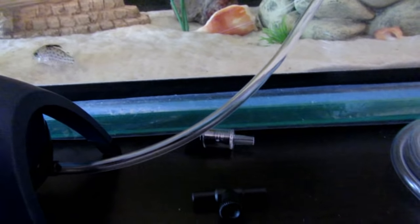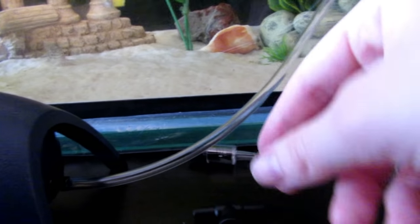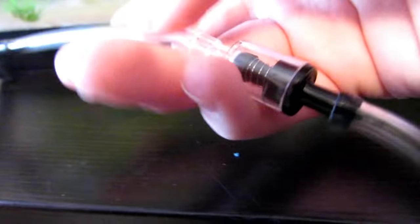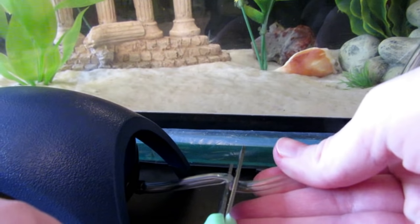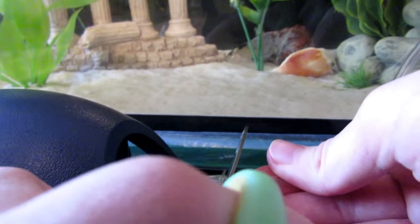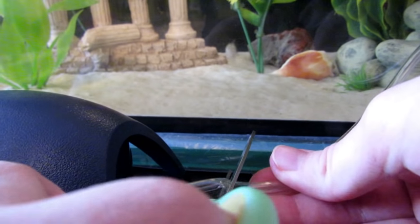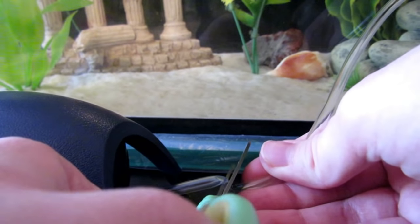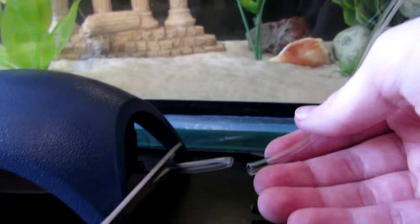After you have the tubing connected to the air pump, now we're going to take your scissors and cut the tubing so we can put in the air control thing and the check valve if you have one. It doesn't really matter where you place the air control thing, just as long as it's in front of the check valve. I decided to cut mine about this close to the air pump.